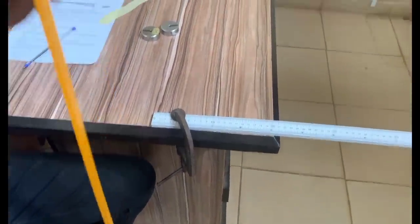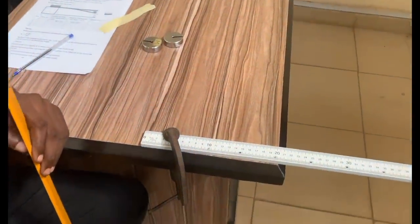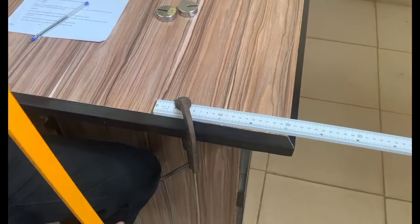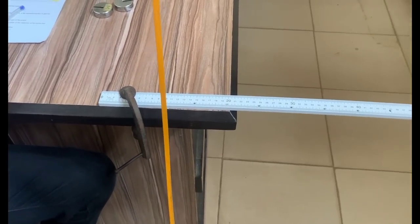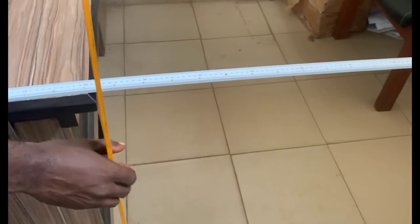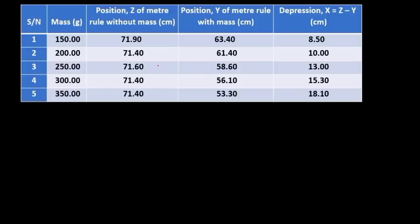We are going to repeat the experiment with masses of 200 grams, 250 grams, 300 grams, and 350 grams. Do not forget to always measure the heights before you load with your mass. We are then expected to plot a graph of mass against depression — the variation in mass against the variation in depression.